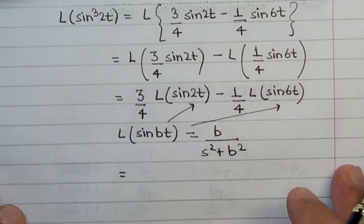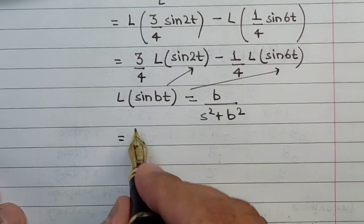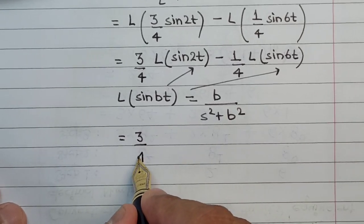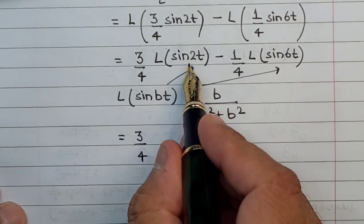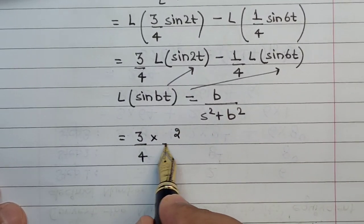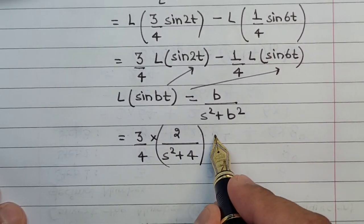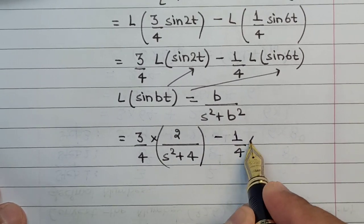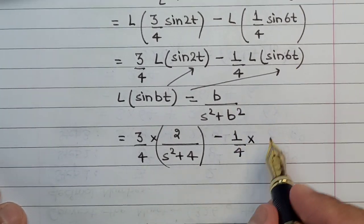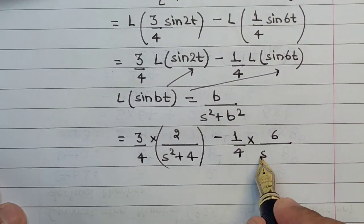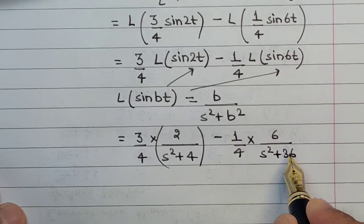This will be 3 upon 4. The value of b here is 2, so this is multiplied by 2 divided by s square plus 2 square that is 4. And this will be minus 1 upon 4 multiplied by the value of b here is 6, so this is 6 divided by s square plus 36.